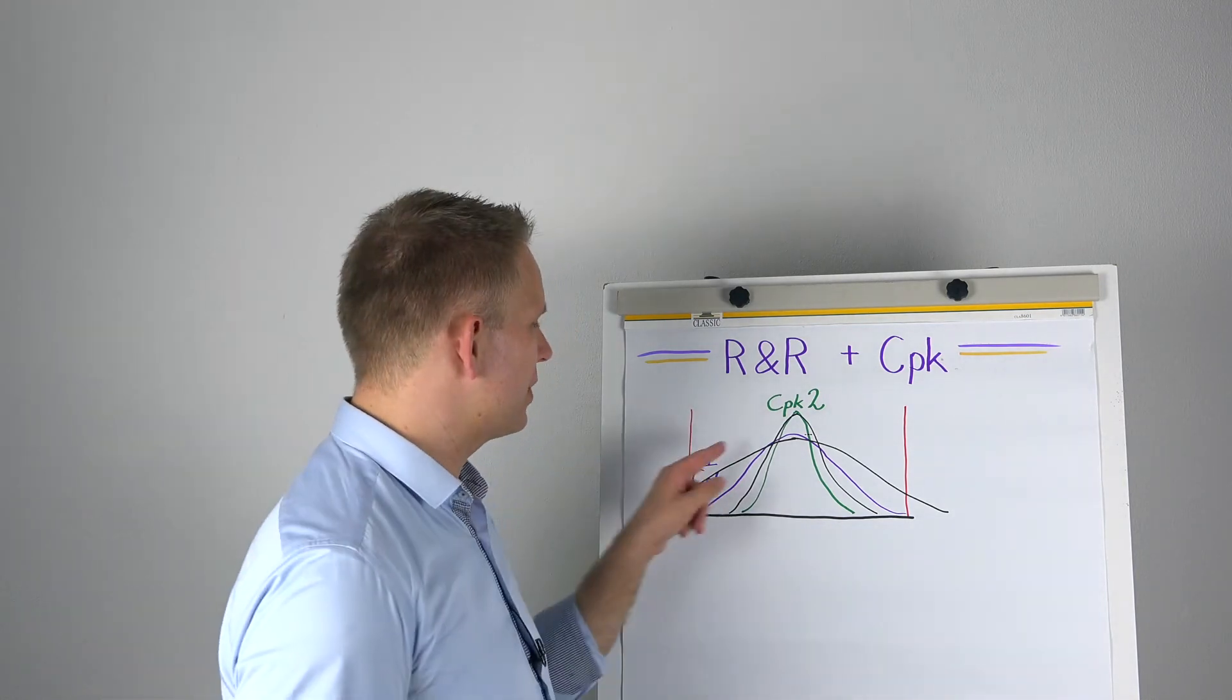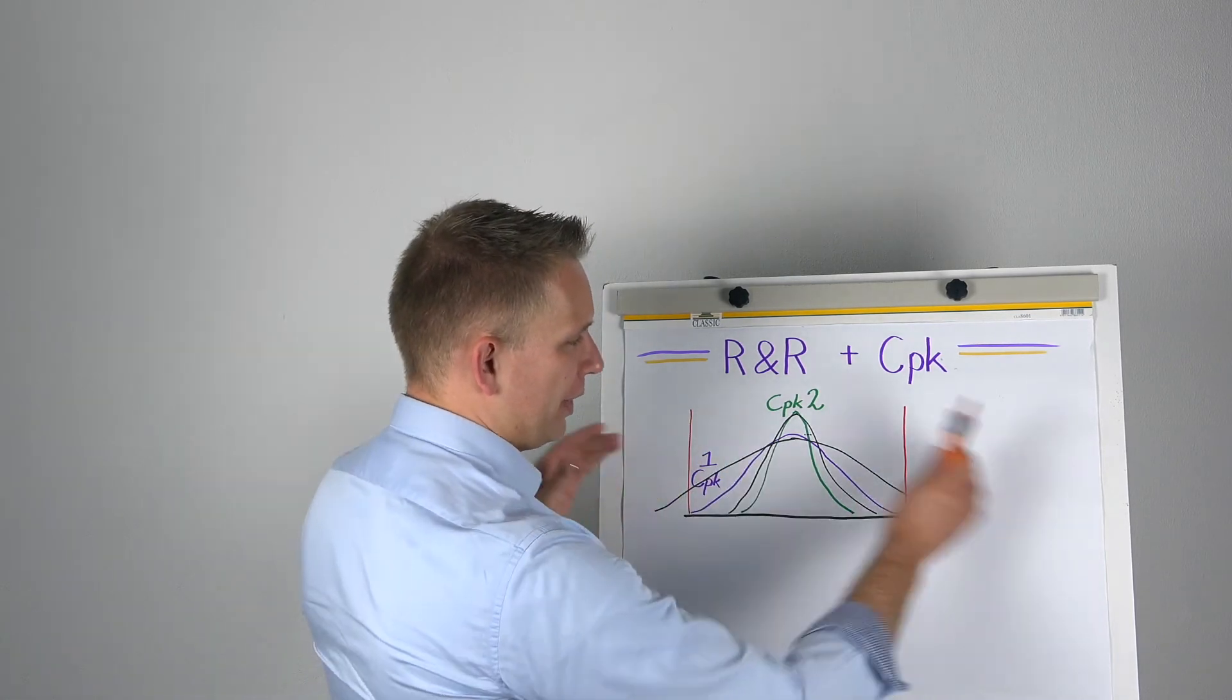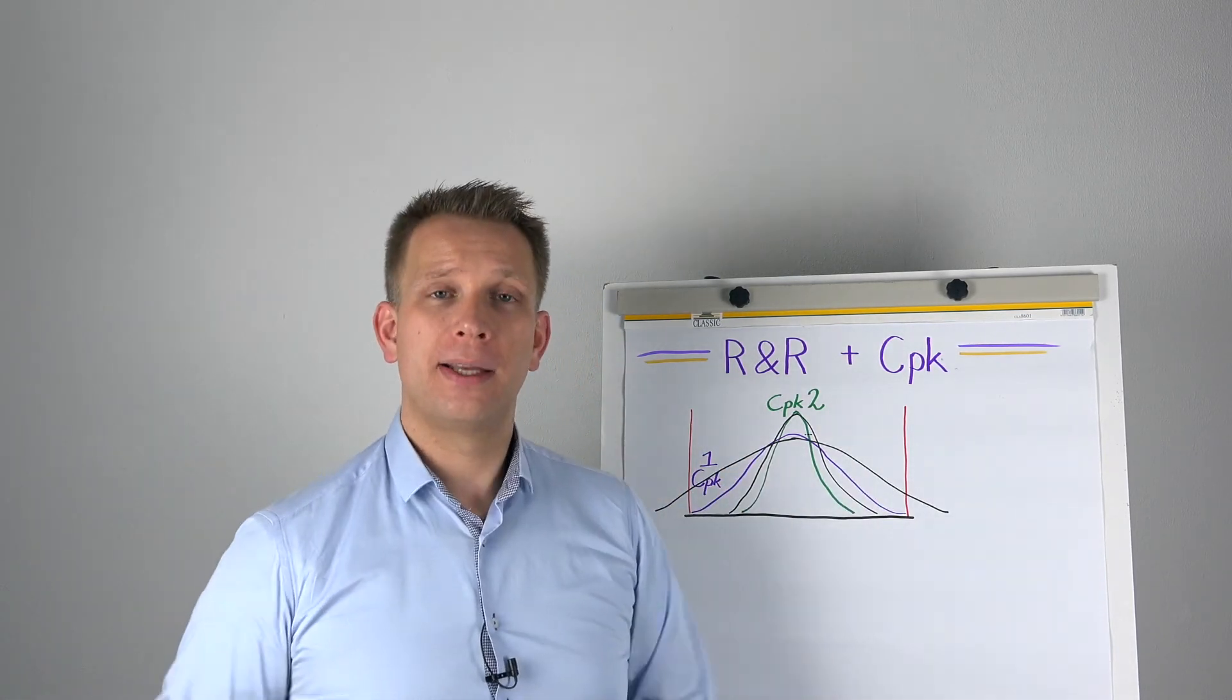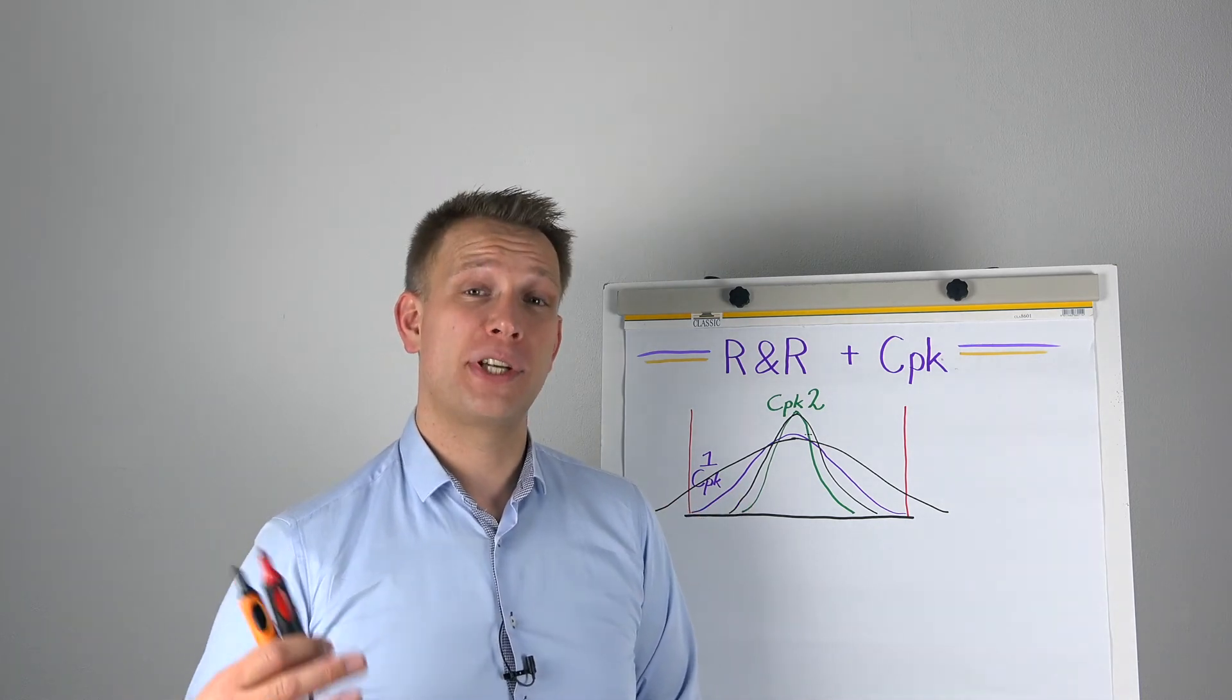Then the sort of, I hope, edge case, when is your R&R better when you compare it to the data of your process, than when you compare it to your tolerance limits. Well, that is if your CPK is less than one. So, if you actually have more spread than your tolerance limit.